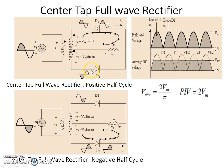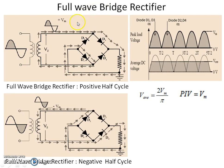In the full-wave bridge rectifier, four diodes are used. During the positive half-cycle diodes D1 and D3 are forward biased and current flows through the load. During the negative half-cycle diodes D2 and D4 are forward biased and current flows through the load in the same direction. Both positive and negative half-cycles are fully rectified. The average output voltage and equations are the same as for the center-tap full-wave rectifier.